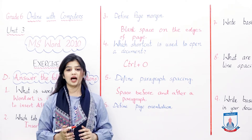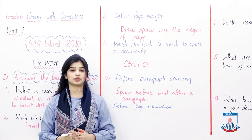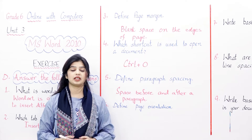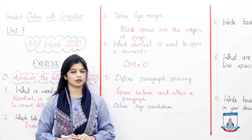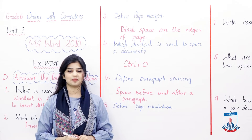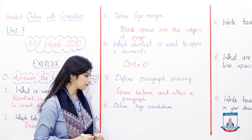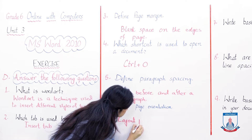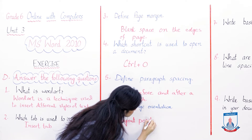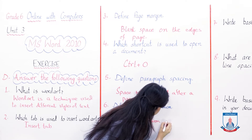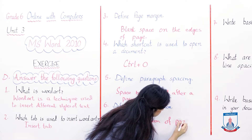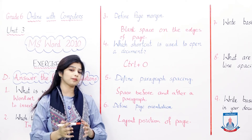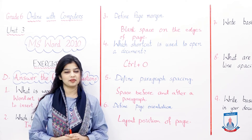Define page orientation. We have studied page orientation in MS Word. Page orientation is the layout position of a page. It has two types: portrait and landscape. Let's note this answer.